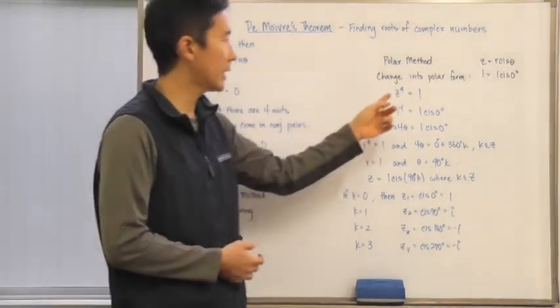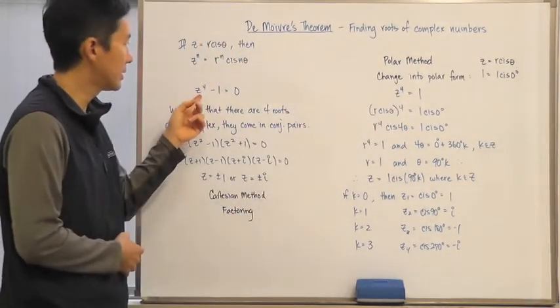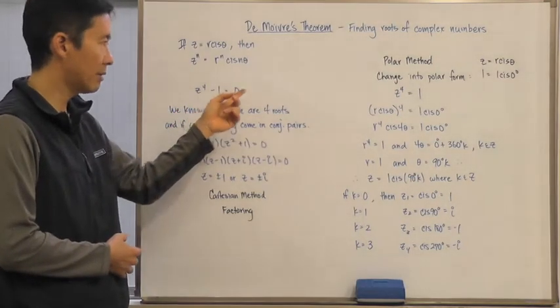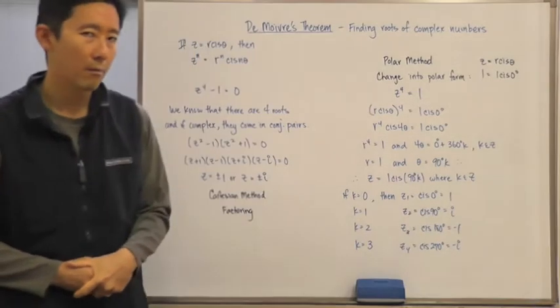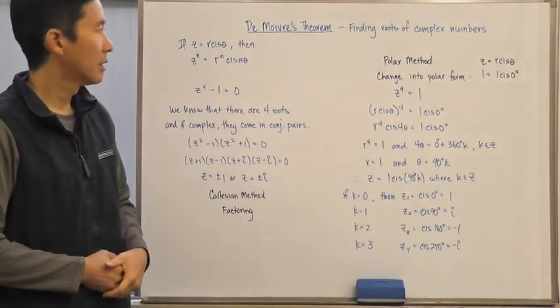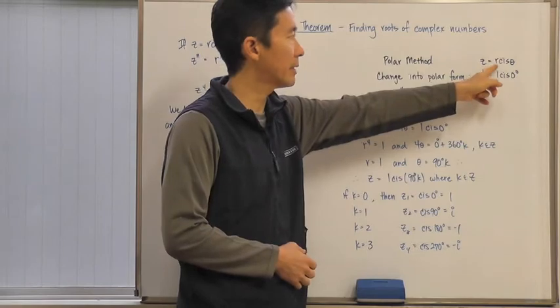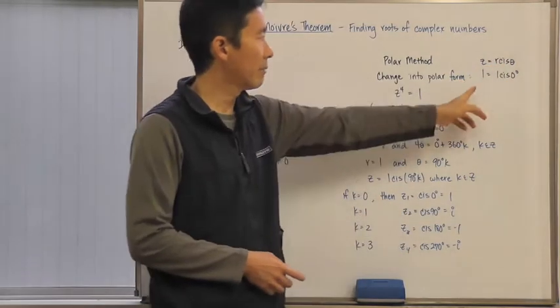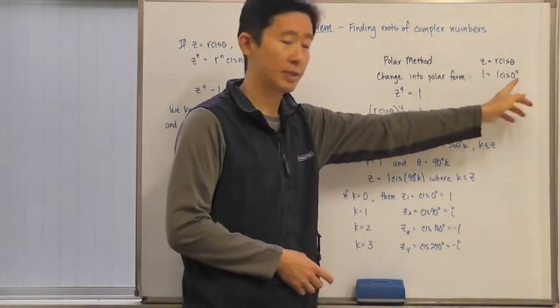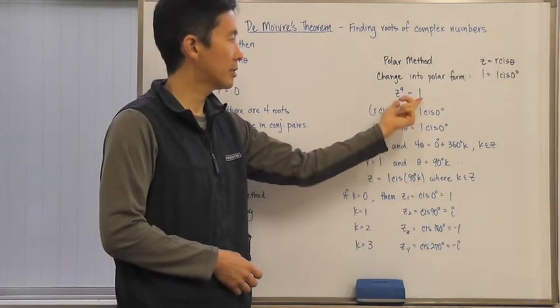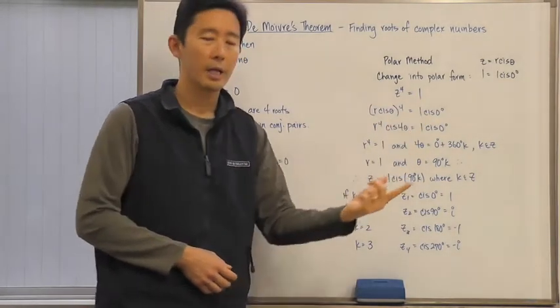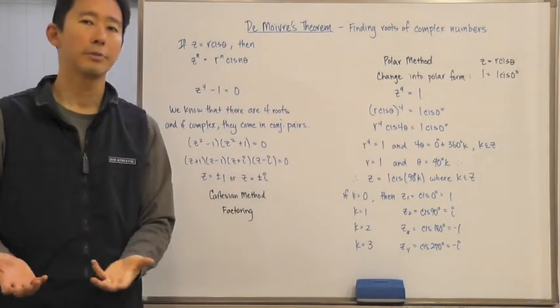So, what we're going to do is instead of having z to the fourth minus one equals zero, we're going to say z to the fourth equals one. Now, why are we going to make that change? Well, because if we assume that z is equal to r cis theta, and one equals one cis of zero degrees, now we can take a look at two complex numbers in polar form being equal to each other.